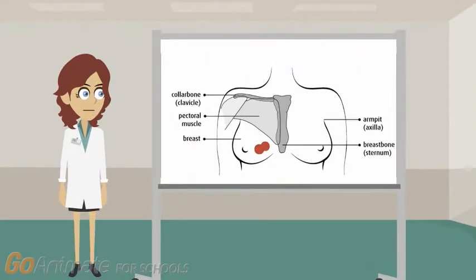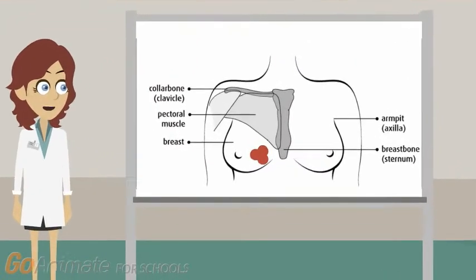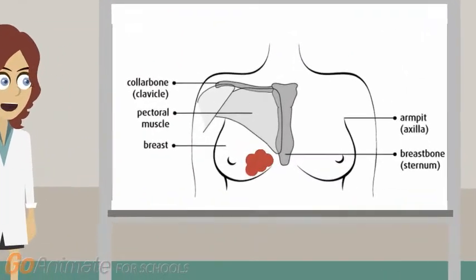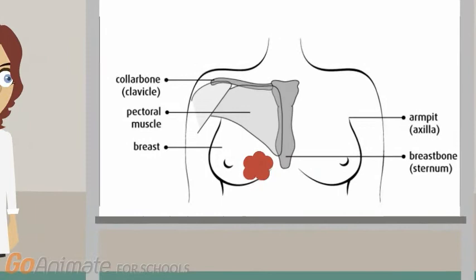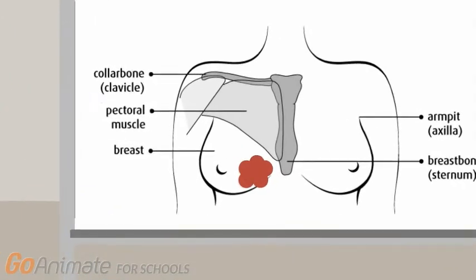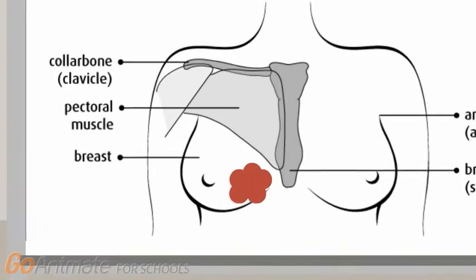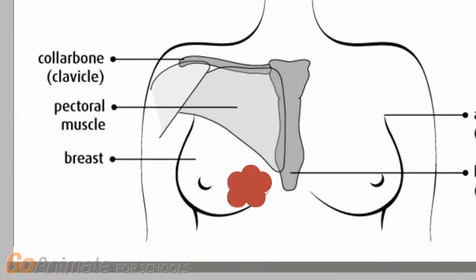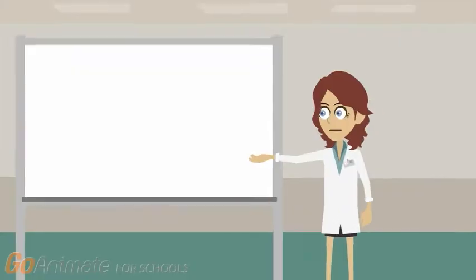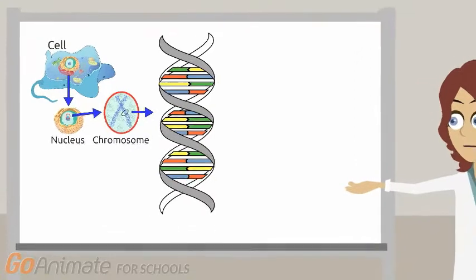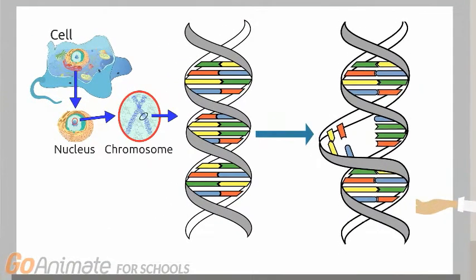In cancer, the body's cells multiply uncontrollably because the process of cell growth becomes unregulated, where new cells form when the body does not need them. Also, these cells do not easily die, as they are not recycled like normal cells. DNA controls cell growth, but when a healthy cell's DNA is altered or damaged, the cell becomes mutated. Mutated cells begin to grow abnormally, which results in cancer.